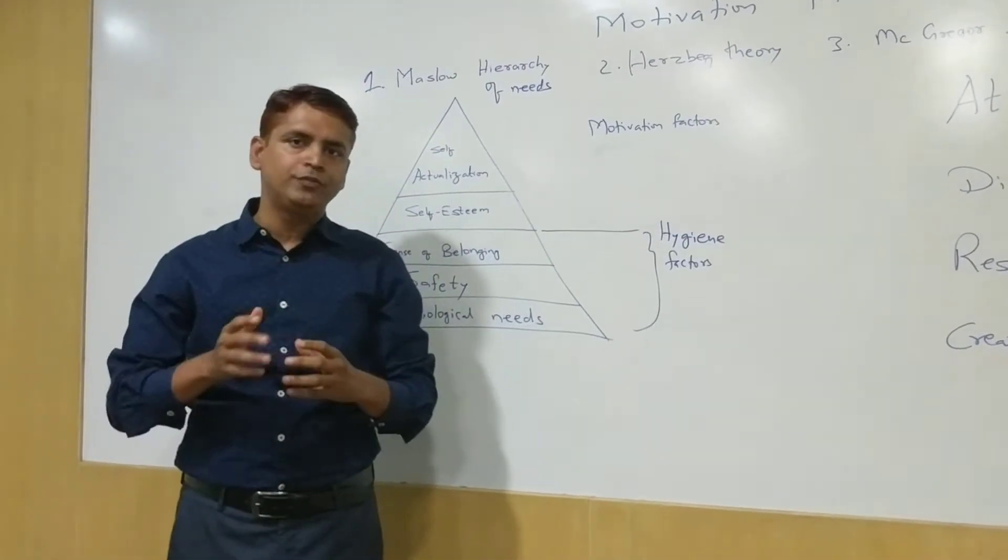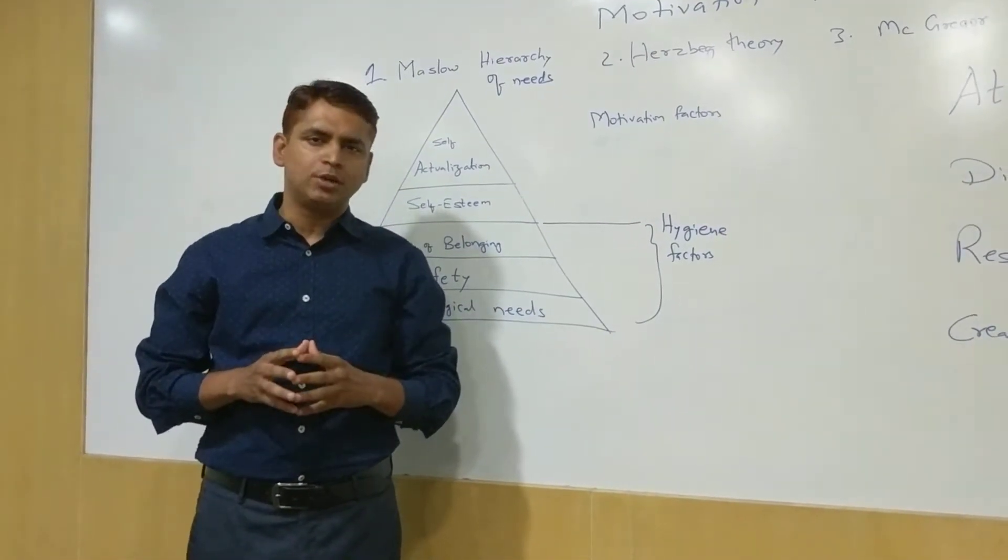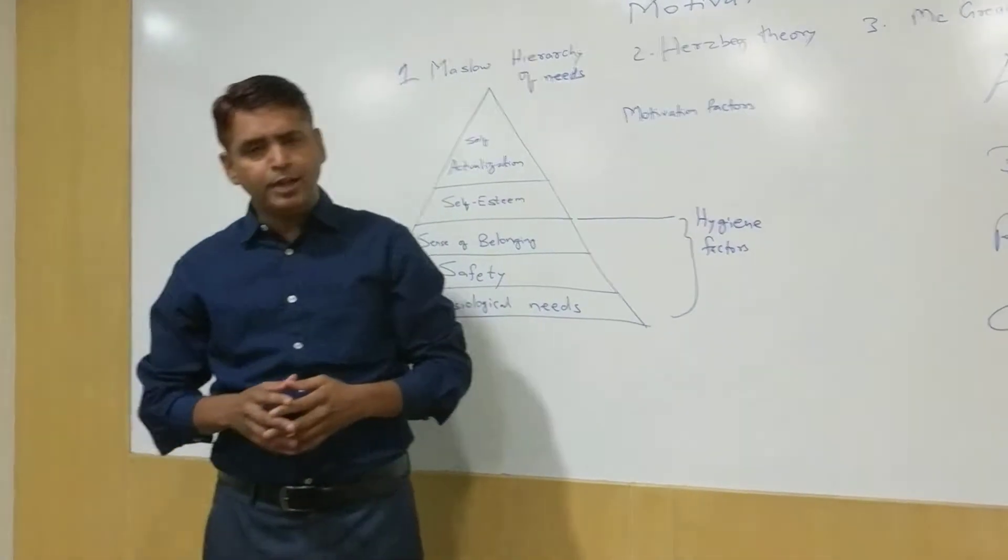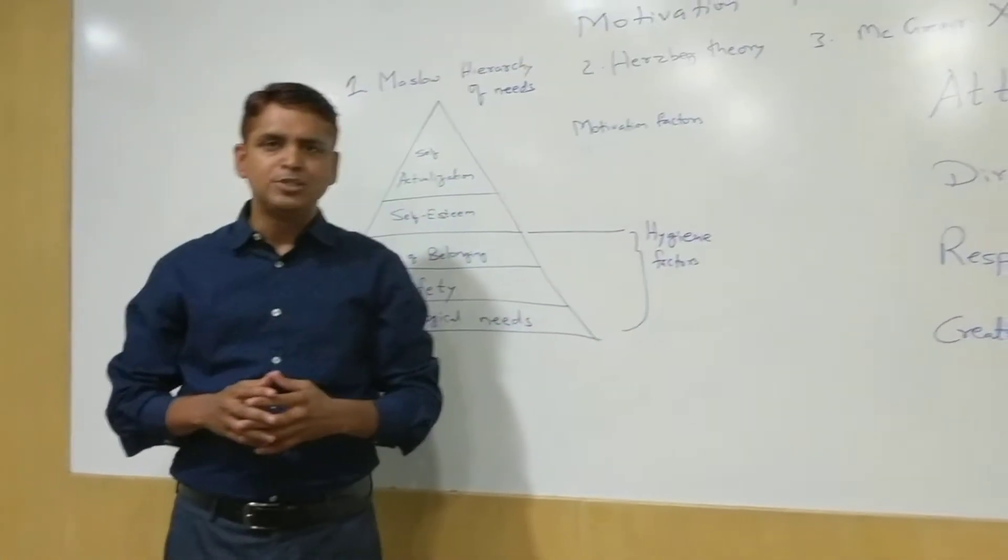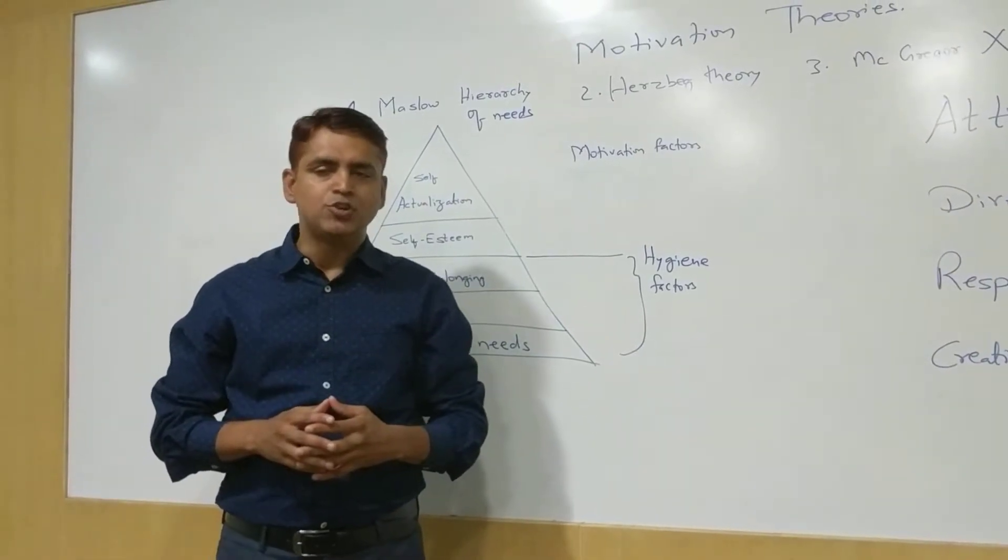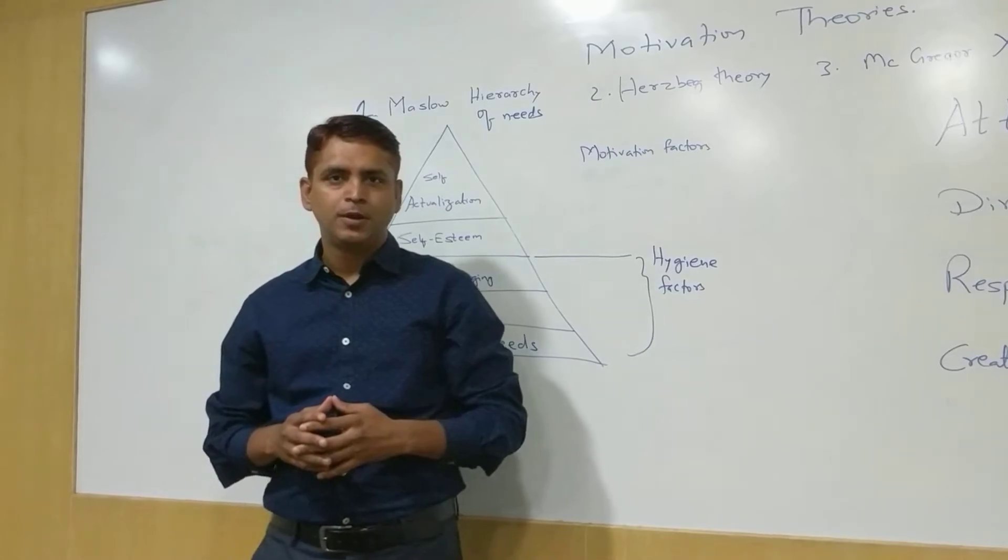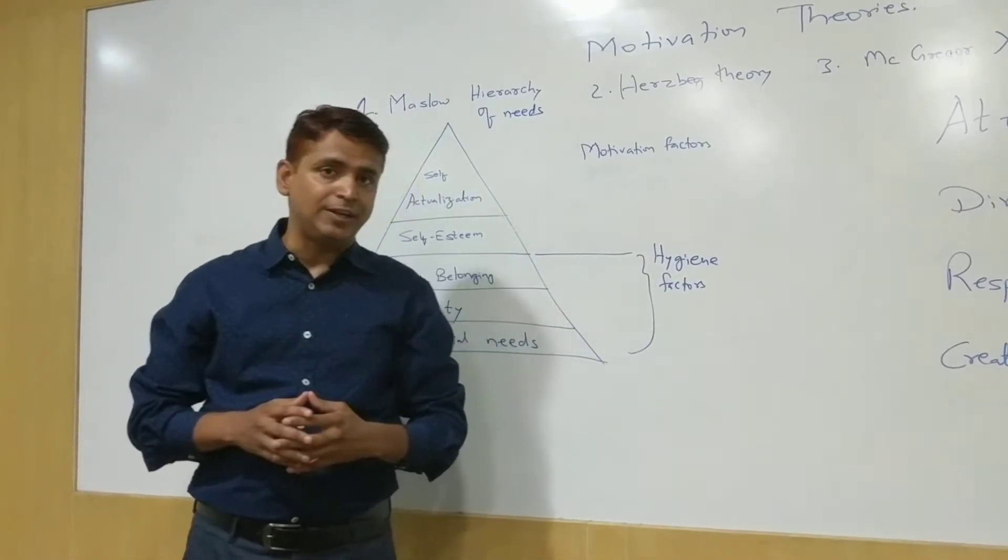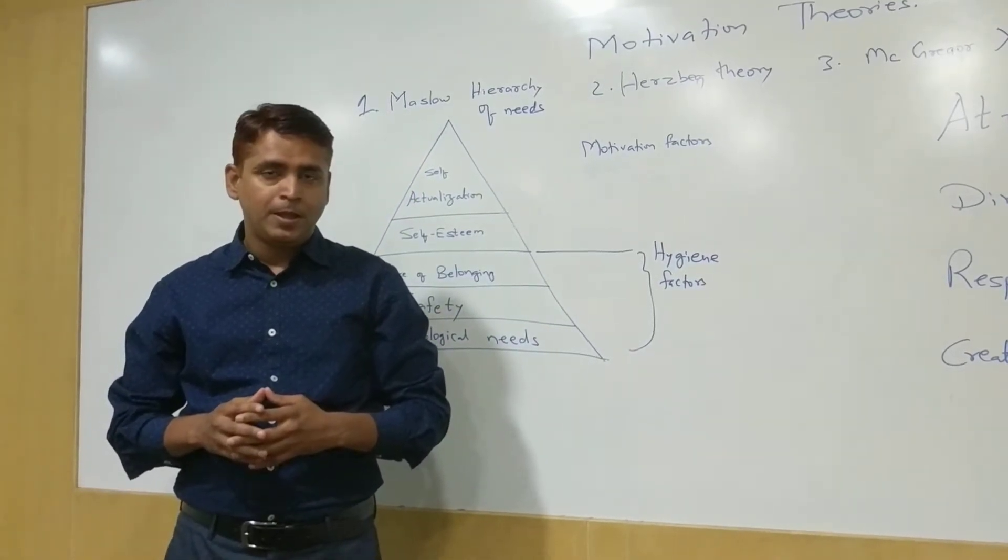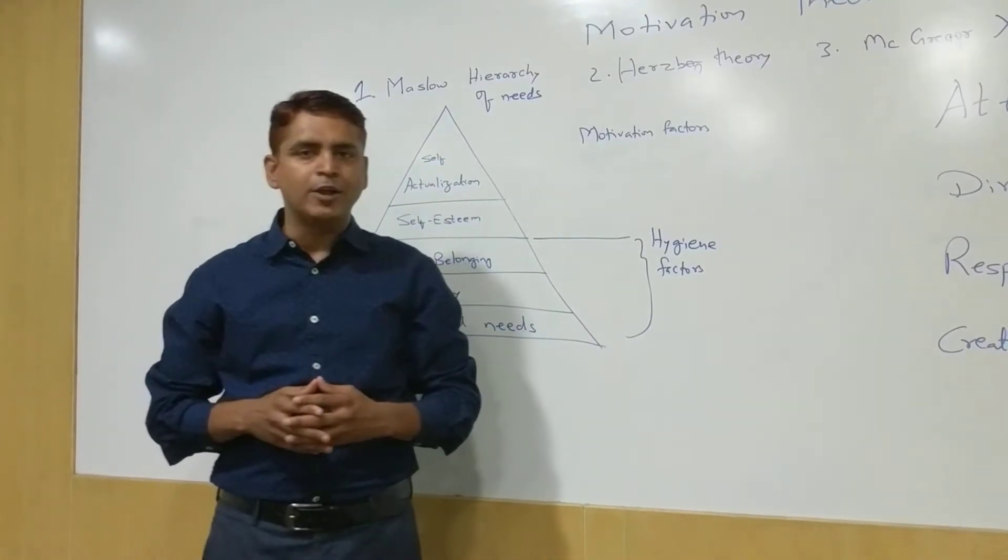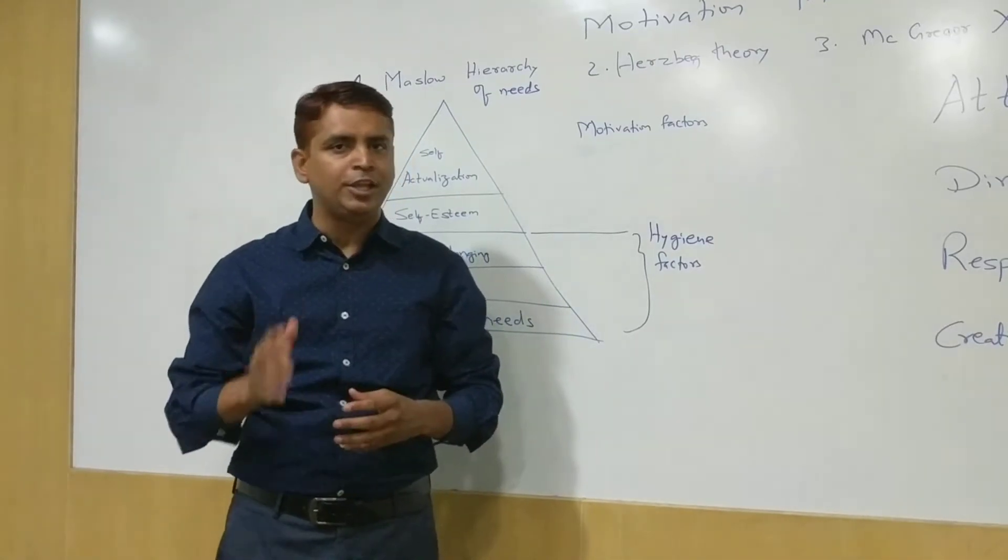Before we get started with these, let's start with one of the Apple advertisements. It was pretty famous. It goes something like this: Here's to the crazy ones, the misfits, the rebels, the troublemakers, the round pegs in the square holes. They see things differently. They are not fond of rules. You can court them, disagree with them, glorify or vilify them, but the only thing you cannot do is ignore them.